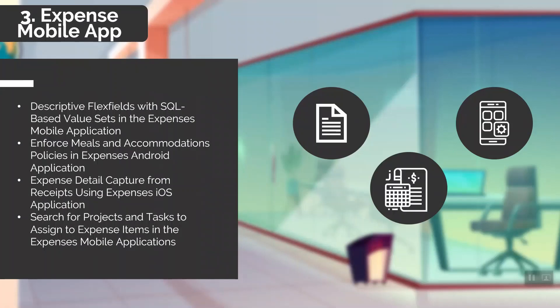For each receipt, employees can select an expense type, create an expense item from the receipt details, and make modifications as needed. The final feature is available to Android and iOS users: the ability to search for projects and tasks within expense items in the expense mobile application. Employees can select projects from their list of either their last five projects used or search the full project list.